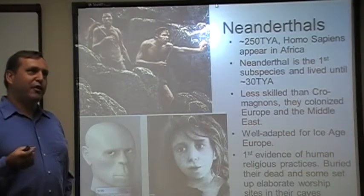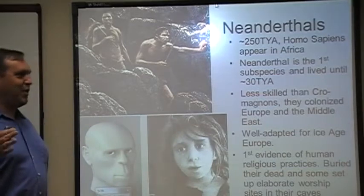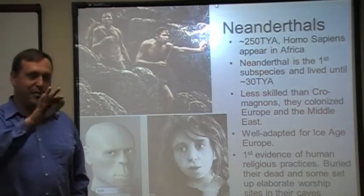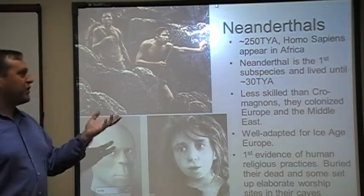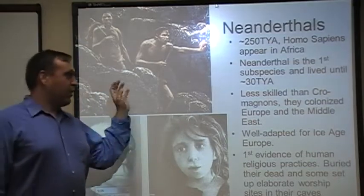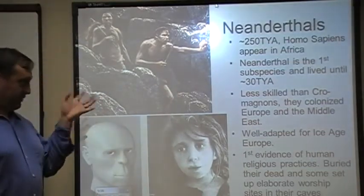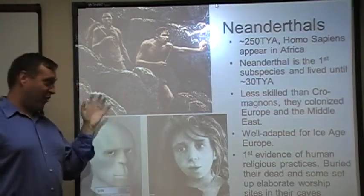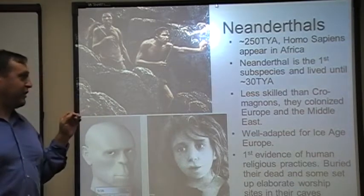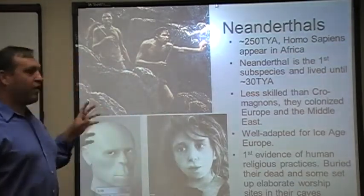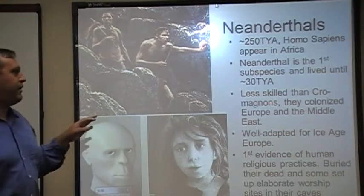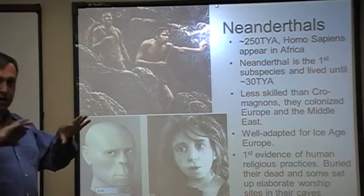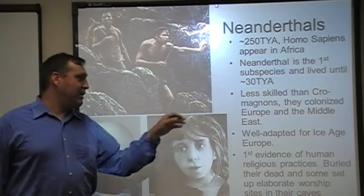Now we take an interesting parallel or side track — depending on your viewpoint — and that's the Homo neanderthalus, or Homo sapien neanderthalus. About 250,000 years ago, we're going to see these Homo sapien-like people appear in Africa. It's the first subspecies of Homo sapien, at least according to some in the scientific community, and you'll find them in the fossil record from about 250,000 years ago until about 30,000 years ago. They're less skilled than the later Cro-Magnons, but still pretty effective colonizers, and we'll find them in Europe and in the Middle East.